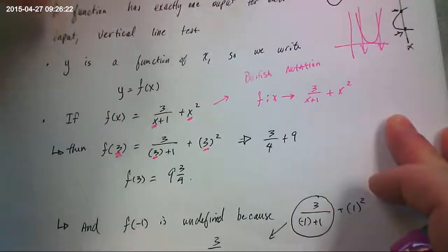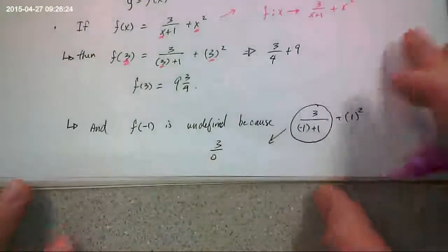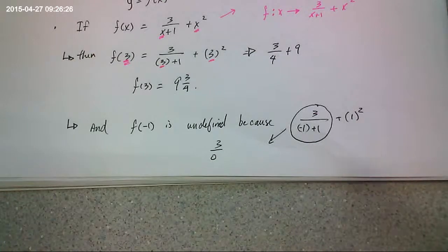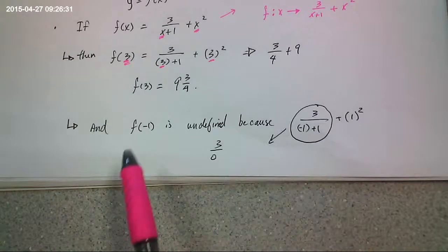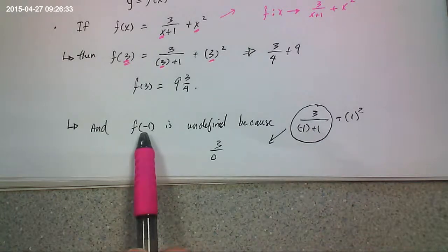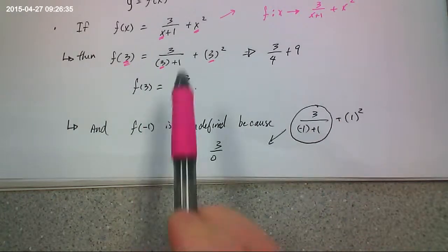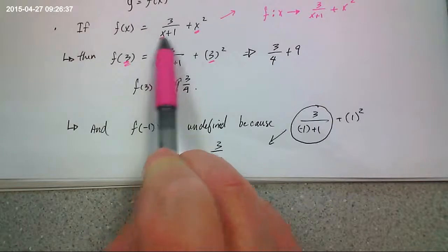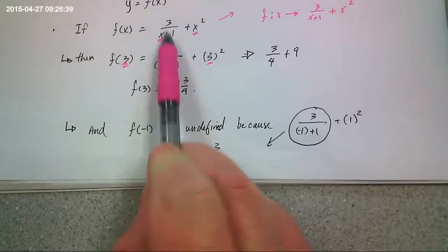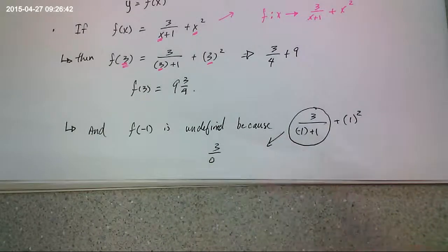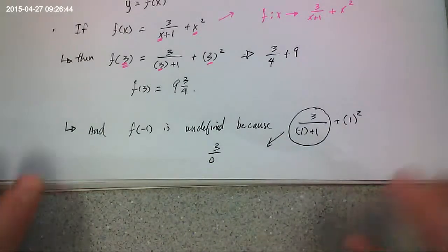For rational functions, like this one right here where there's a ratio, sometimes there's limits to the domain. The domain is, of course, a set of all possible inputs. For example, here, you can't use negative 1 for x. If you use negative 1 for x, you see negative 1 plus 1 is 0. You can't divide by 0. Nothing times 0 equals 3. That would be undefined.